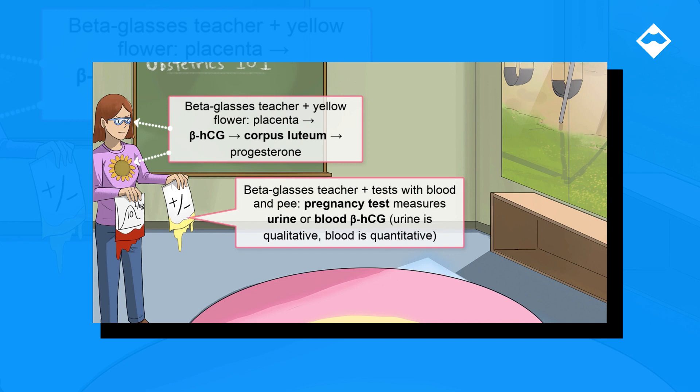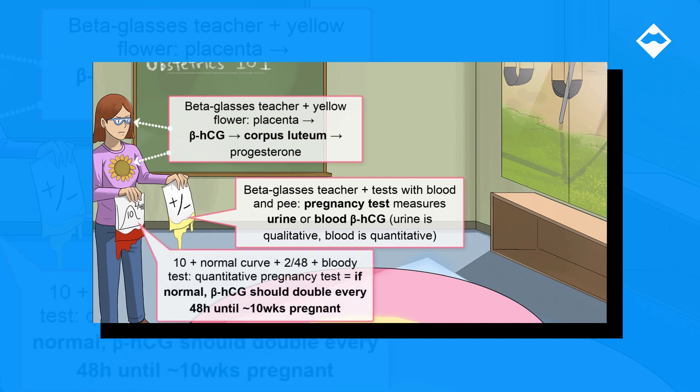Both urine and blood pregnancy tests detect beta-HCG. The urine test is a qualitative — positive or negative — beta-HCG test, and the blood test is usually a quantitative amount of beta-HCG detected. If it's a quantitative test, the level of beta-HCG should double every 48 hours and peak at about 10 weeks into the pregnancy.